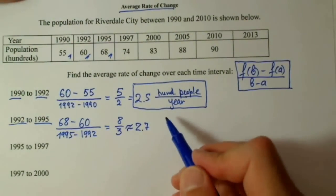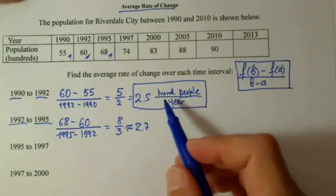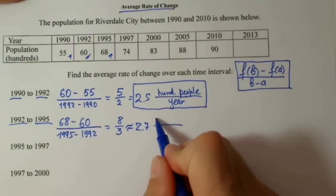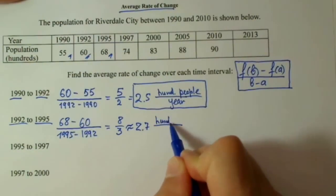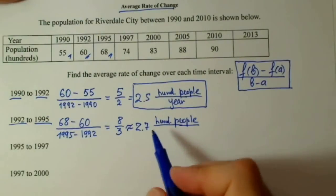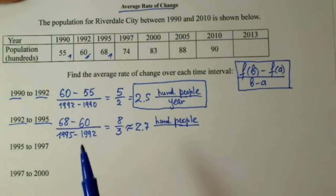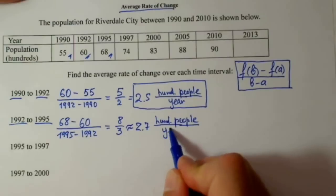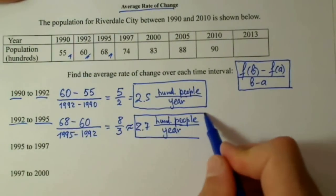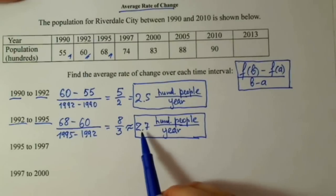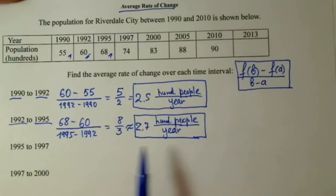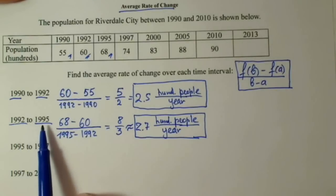The units are hundreds of people over years — same as before. So our average rate of change is 2.7 hundreds of people per year for the time interval between 1992 and 1995.